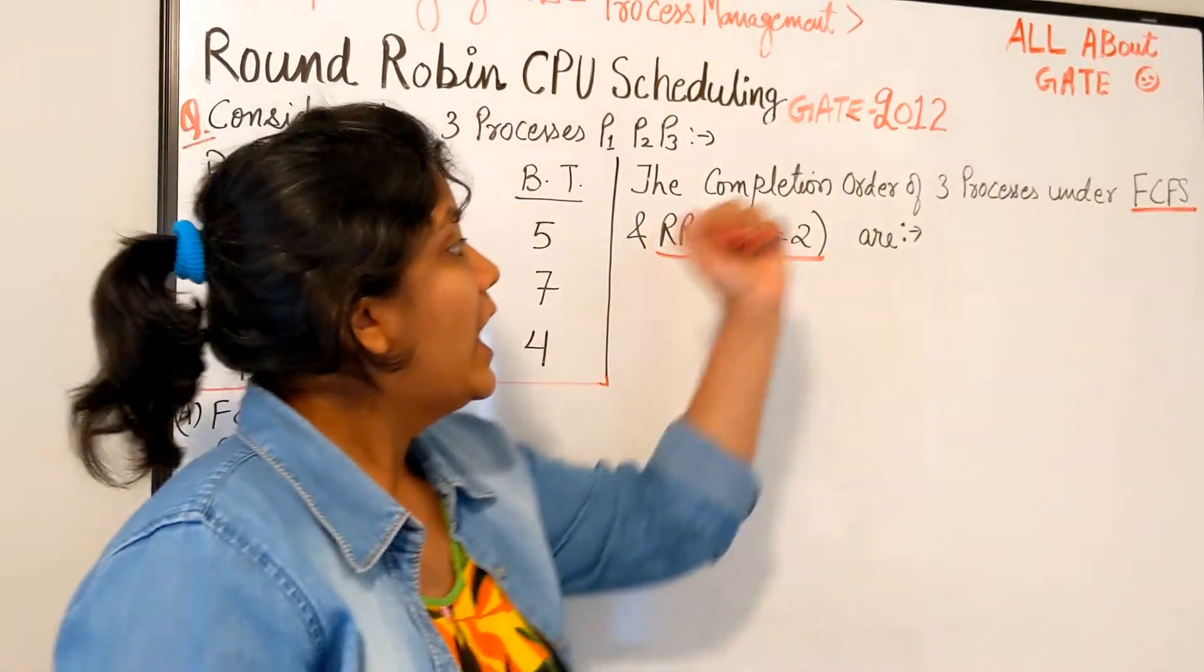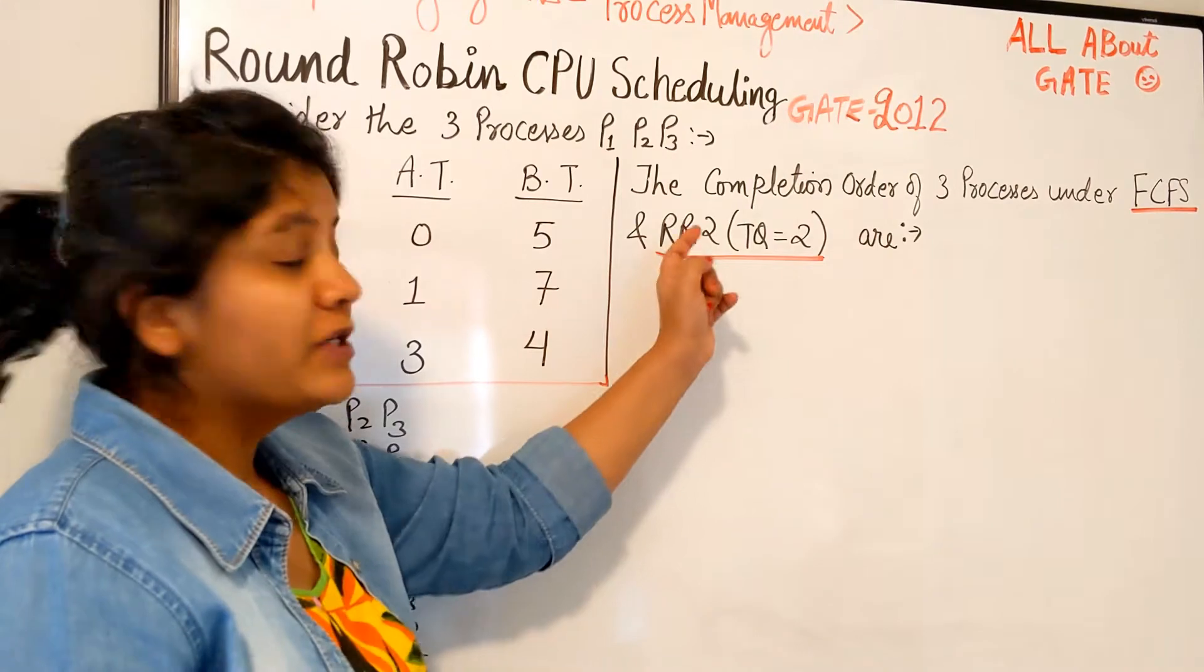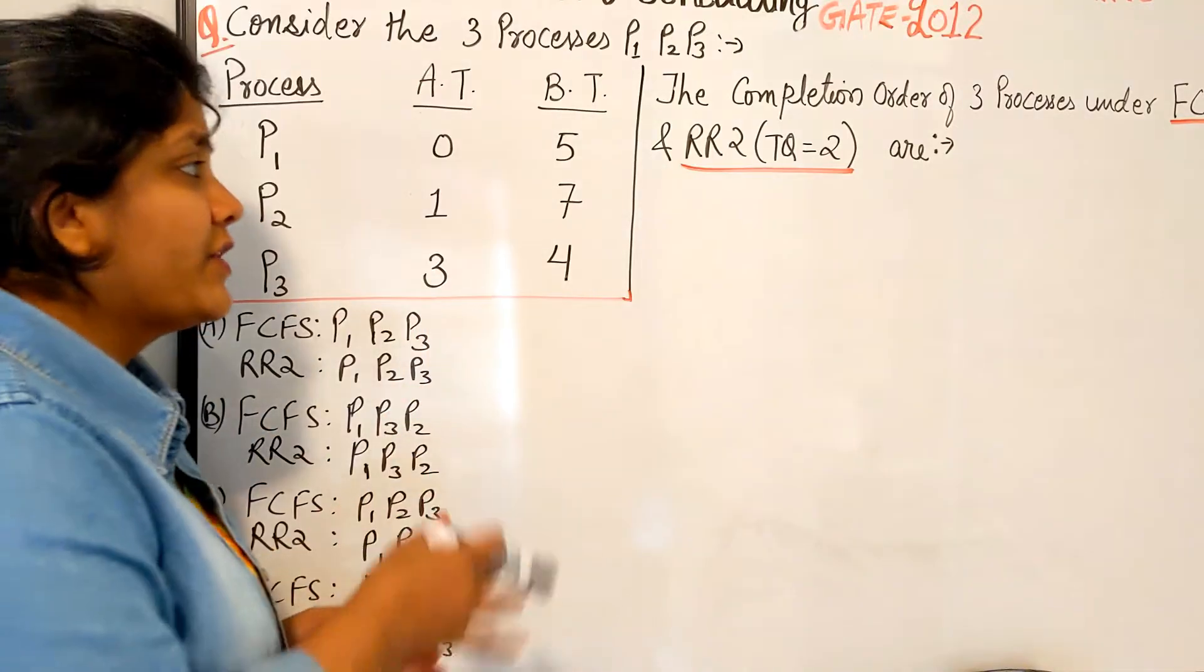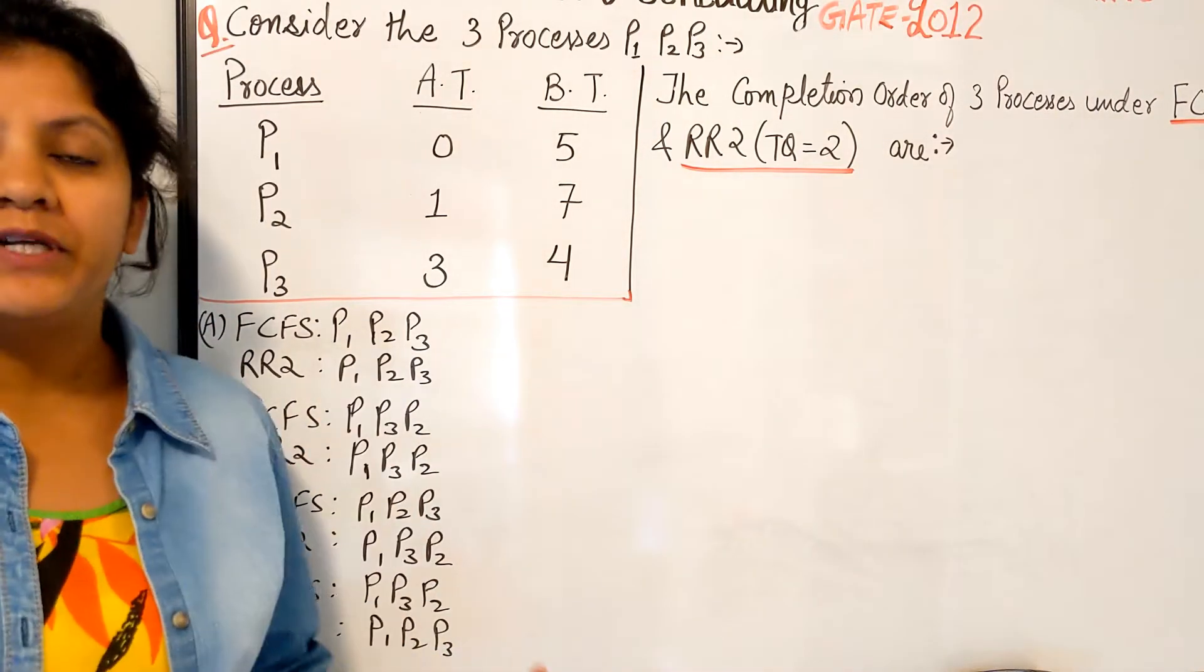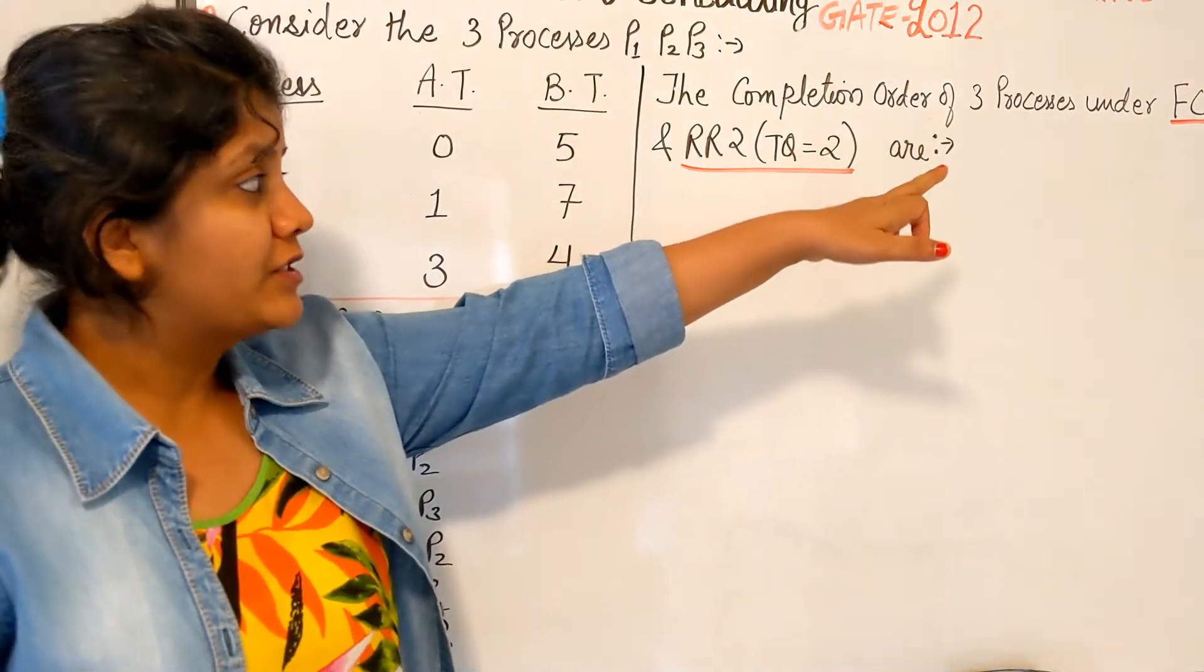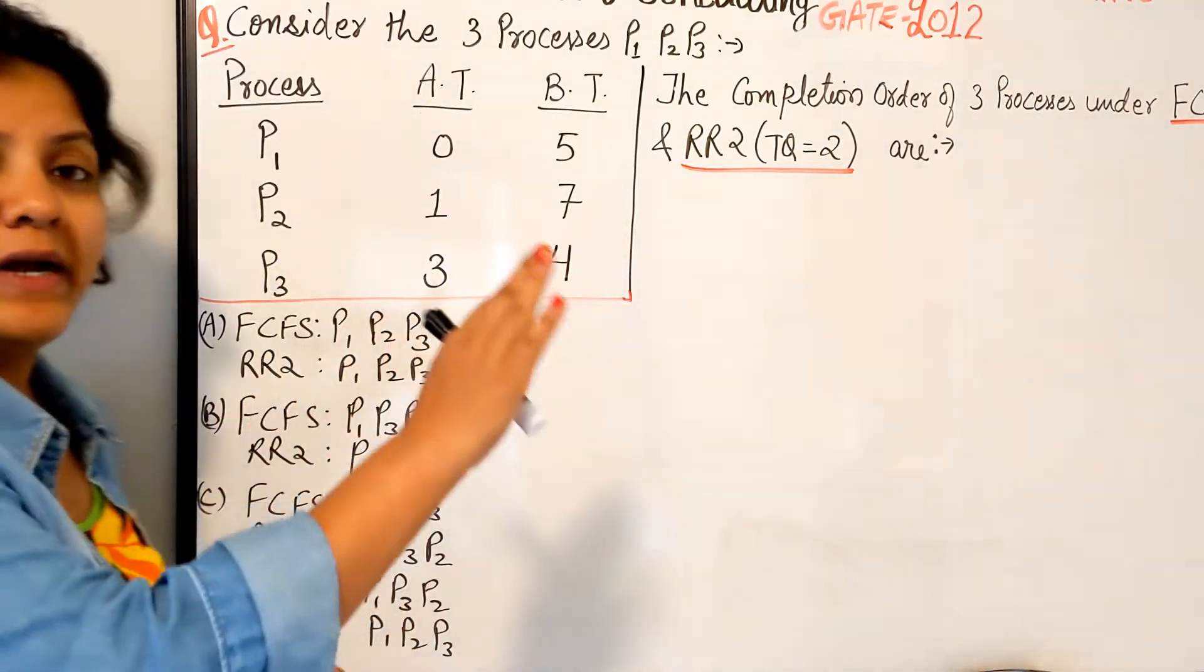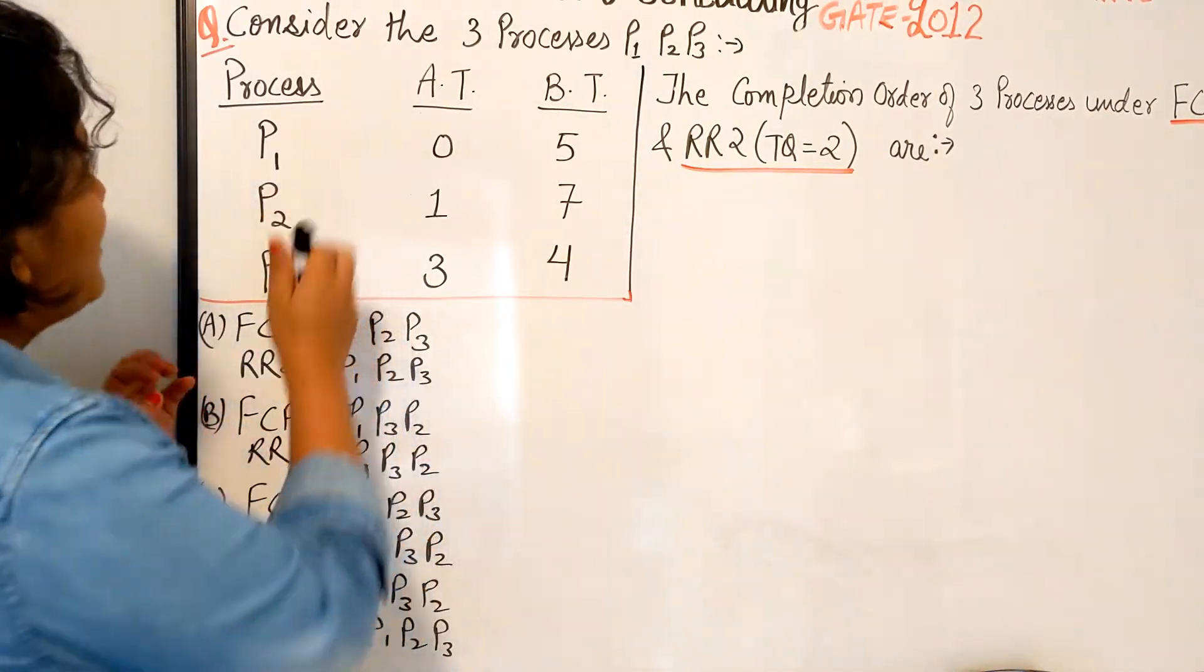Round-Robin with time quantum 2. It's one of the very easy questions and here are the options. Why I have mentioned options right here is because, you know, one of the algorithms is First Come First Serve. So we know whichever process comes first will be executed first. I don't even need to solve the question to know which process is coming first.